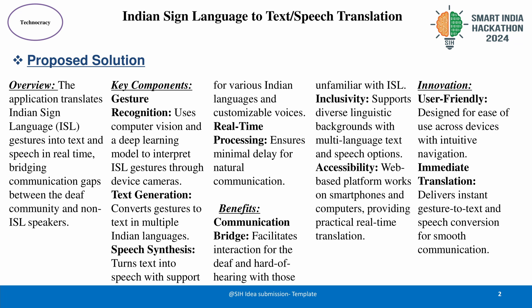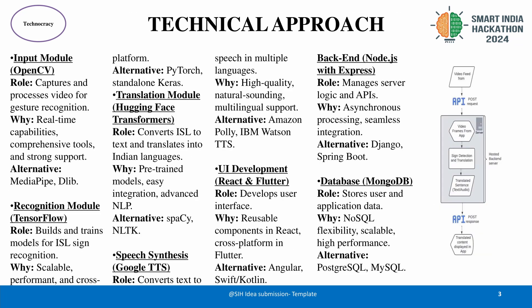Once gestures are recognized, the next step is converting them into text. Our text generation module utilizes Hugging Face Transformers, which is known for its advanced natural language processing capabilities and pre-trained models. This module translates ISL gestures into text and supports multiple Indian languages, making the application versatile and inclusive. Alternatives like SpaCy and NLTK are available, but Hugging Face provides a more seamless integration for our requirements.